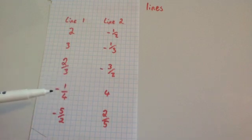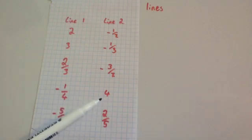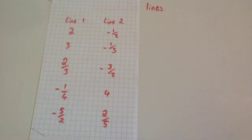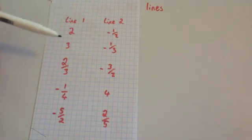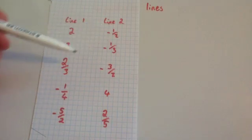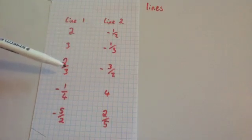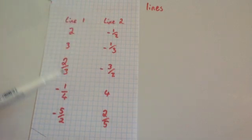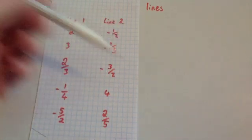I drew a line with a gradient of minus a quarter and the perpendicular line had a gradient of four. And a line with gradient minus five halves gave a perpendicular gradient of two fifths. Notice that what we're doing is taking the reciprocal of the gradient — the reciprocal of two is a half, the reciprocal of three is a third, the reciprocal of two thirds is three halves.